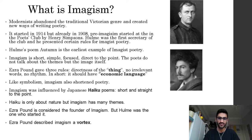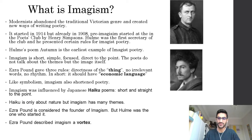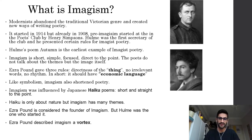An imagist poem should be direct, should contain no irrelevant words, and should be in free verse. Like symbolism, imagism also shortened poetry. Victorian poetry or realism was too long, but imagists said it should be short and very straightforward. Another very important note is that imagism was influenced by Japanese haiku poems — these are short and straight to the point. However, while haiku is only about nature, imagism has many themes.